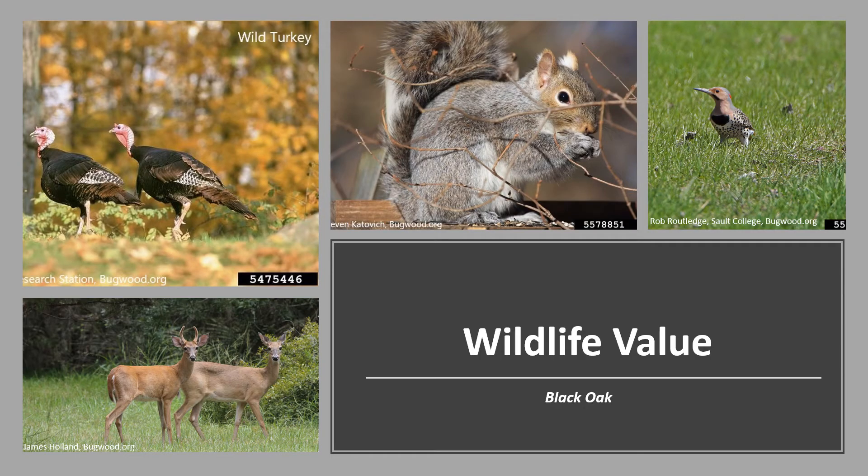Black oak is an important wildlife tree. The acorns provide food for a variety of wildlife, including squirrels, mice, white-tailed deer, and wild turkey. In fact, a high percentage of the acorns are eaten by wildlife, leaving a low number of seeds for regeneration. The trees also have high cavity value for wildlife and are important nest sites for the northern flicker in Massachusetts.